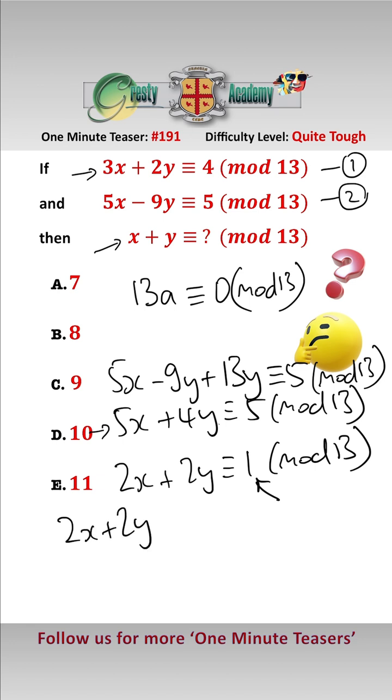So that's 2x add 2y is equal to 14 mod 13, and now we can simply divide by 2. x add y is equal to 7 mod 13, which is our answer. A very nice, neat, quick solution.